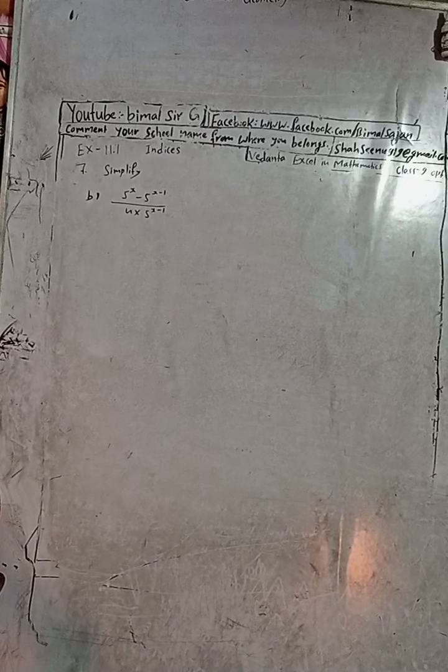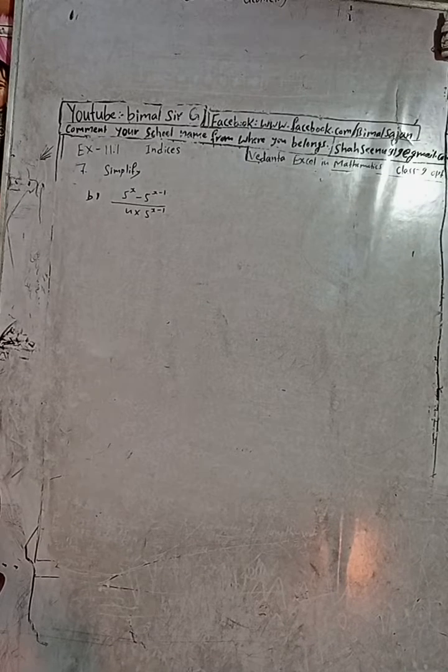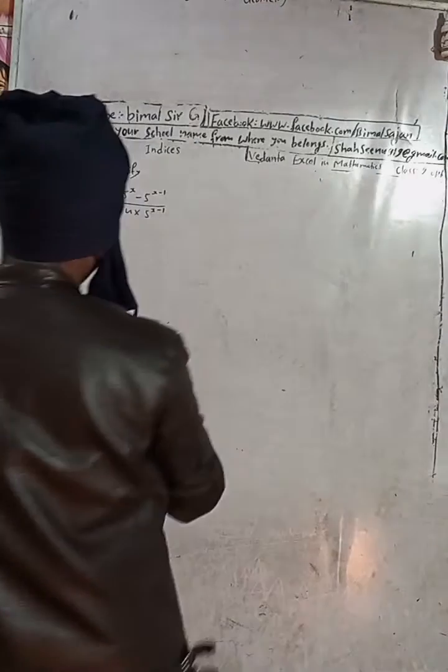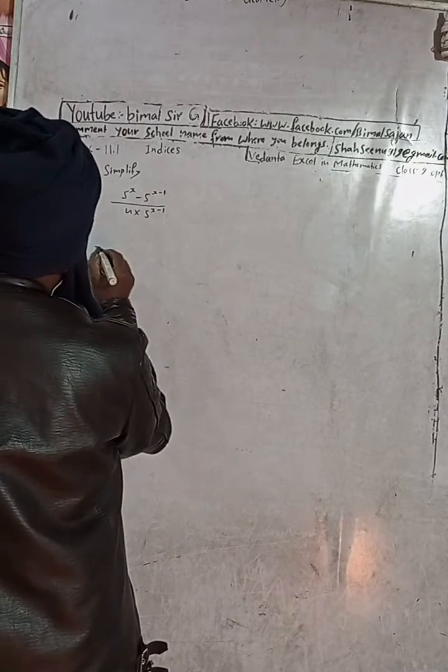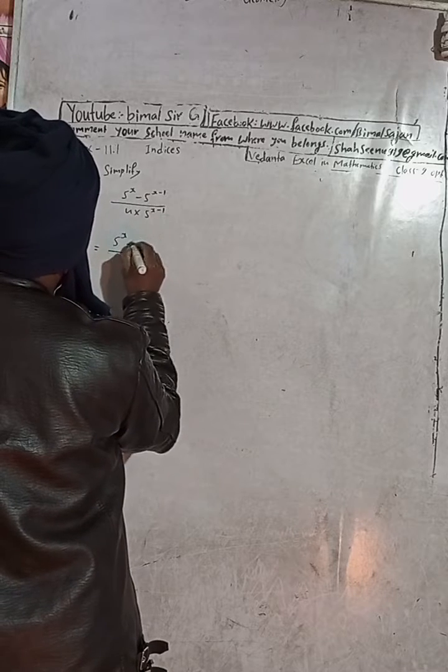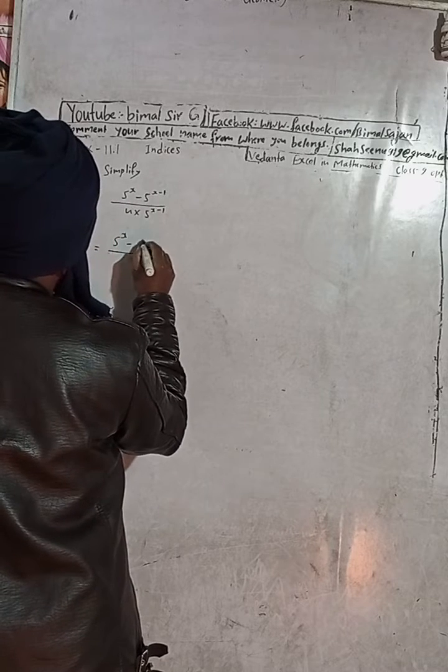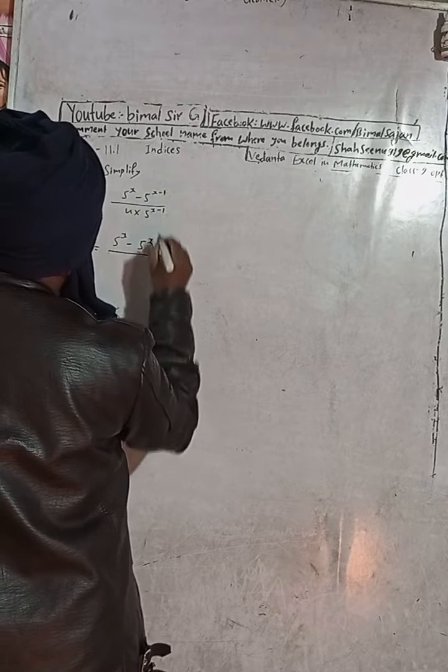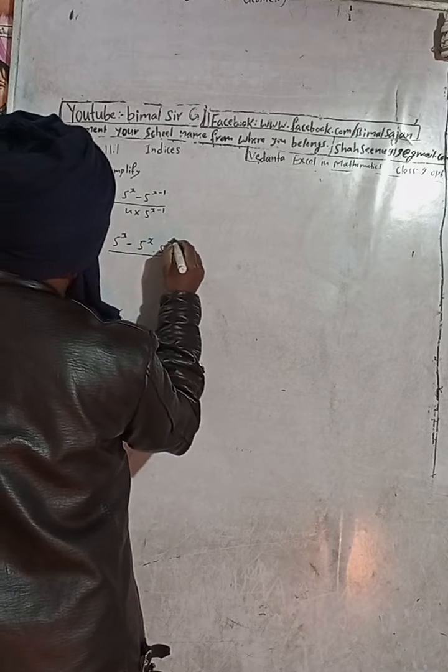This is question number 7b, simplify this. So what we can do now here, 5 to the power x minus, and this can be written as 5 to the power x into 5 to the power minus 1.